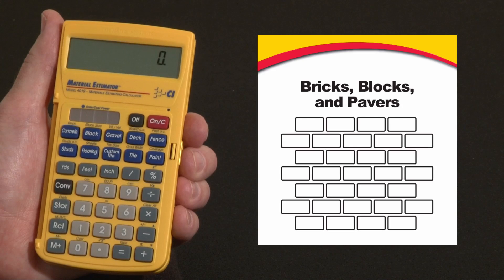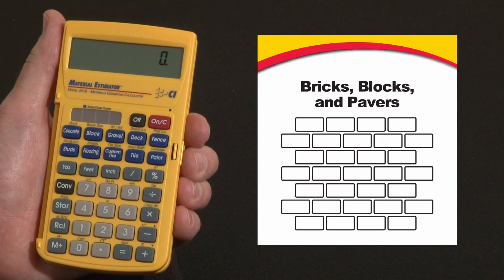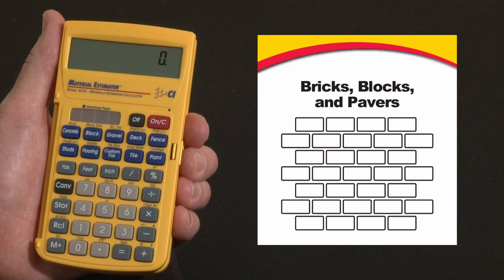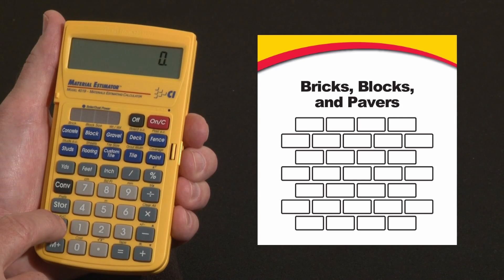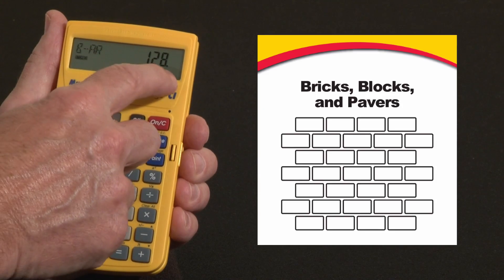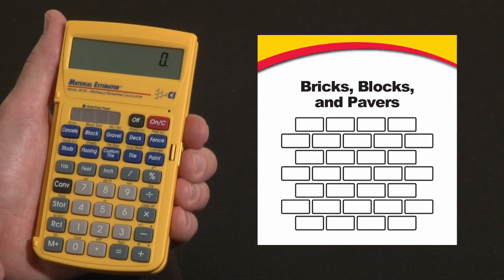Now the default block size built in is an 8x8x16 common concrete block. The face area of that is 8x16, that's 128 square inches. You can check the block area that's stored by hitting recall blocks. Block area is 128 square inches, so you know you've got a common 8x16 block.